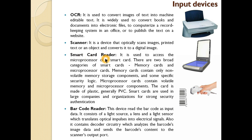Then comes the smart card reader. ATM machines are an example of a smart card reader machine. Our ATM cards have microprocessors in them. There are two broad categories of smart cards: memory cards and microprocessor cards. Memory cards contain only non-volatile memory storage components and some specific security logic. Microprocessor cards contain volatile memory and a microprocessor component. The card is made of plastic — generally PVC — which doesn't break easily. Smart cards are used in large companies and organizations for strong security authentication.